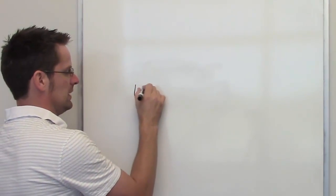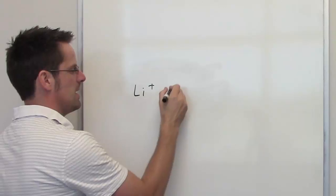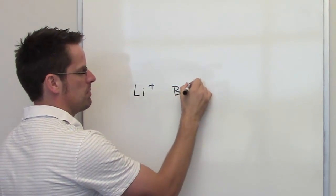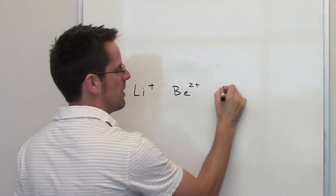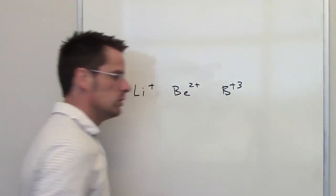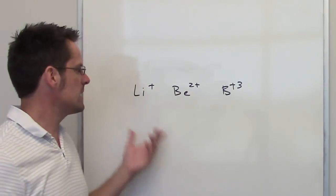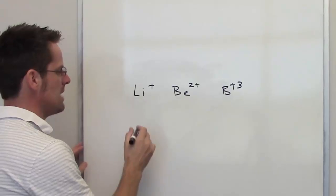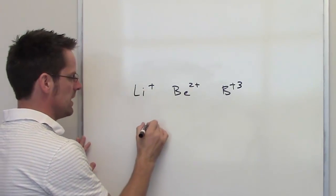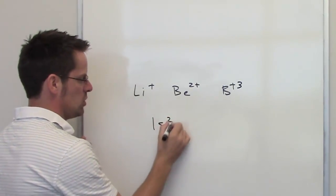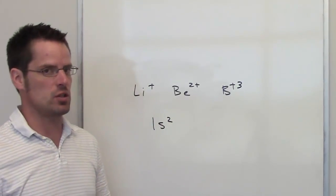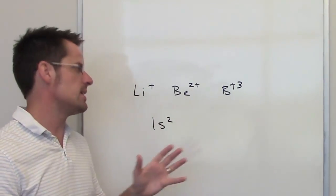In this next question, we're given lithium cation and asked to compare it with beryllium cation and boron cation. Looking at the periodic table, you'll see that all of these elements have the same electron configuration as that of helium, which is 1s2. So, as far as the number of electrons and orbitals is concerned, we can't make a distinction in size.